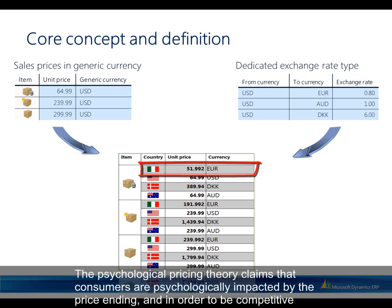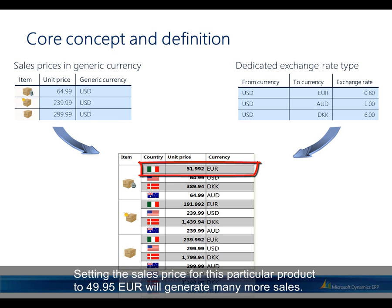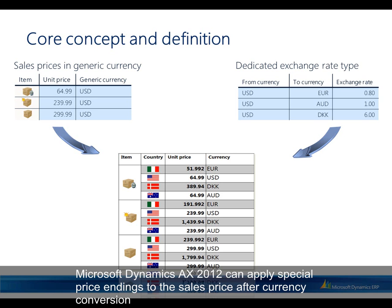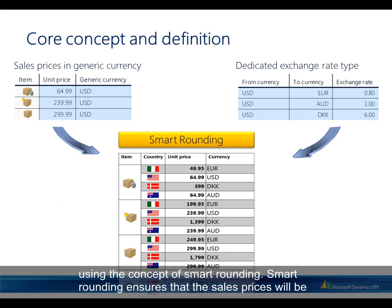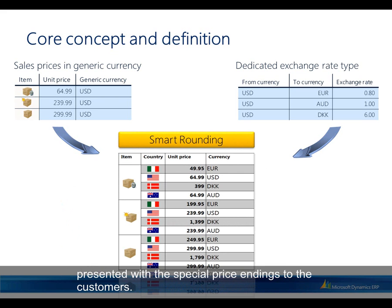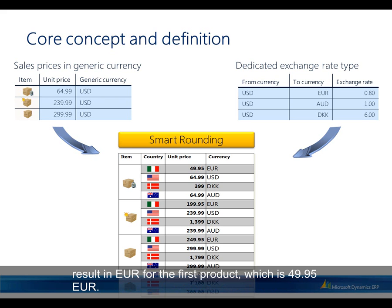Looking at our example, the price for the first product in euro seems a bit high. Psychological pricing theory claims that consumers are psychologically impacted by price endings, and companies must meet special price endings to be competitive. Setting the sales price for this product to 49.95 euro will generate many more sales. Microsoft Dynamics AX 2012 can apply special price endings after currency conversion using the concept of smart rounding.